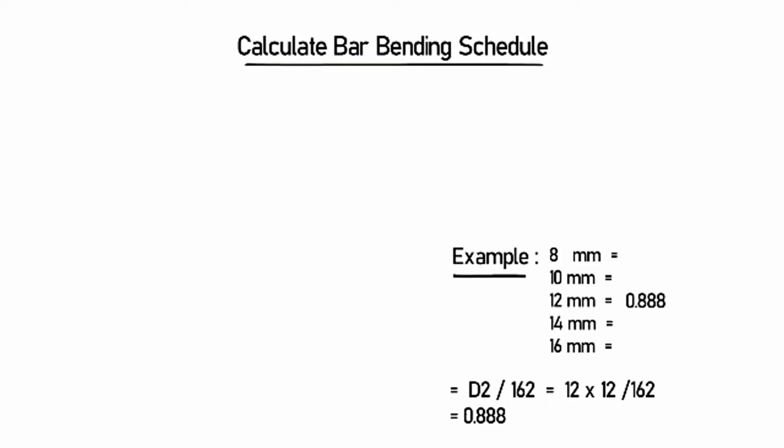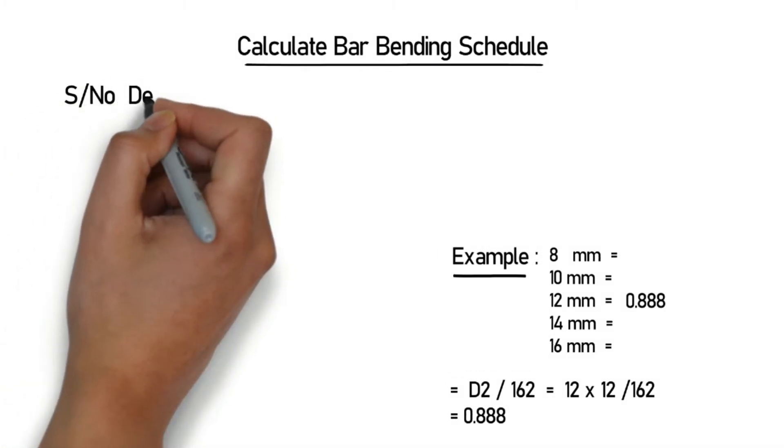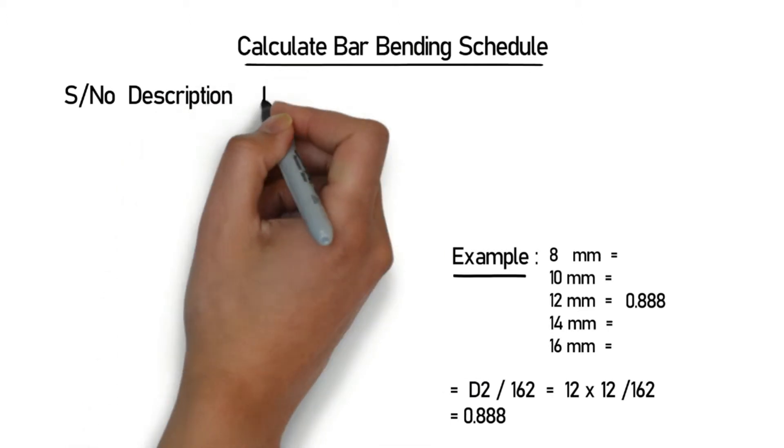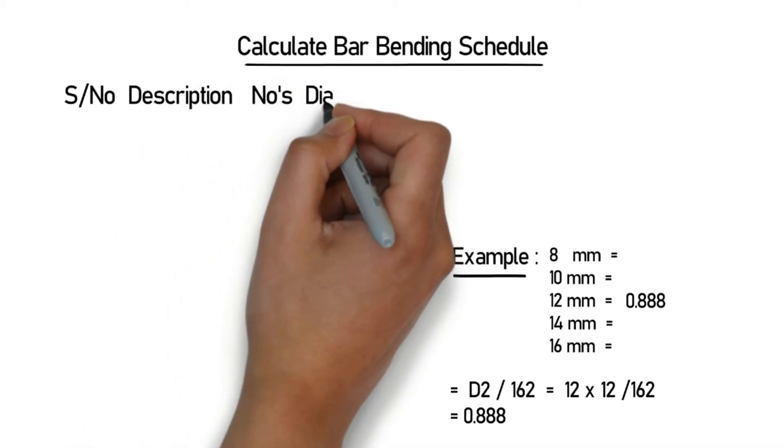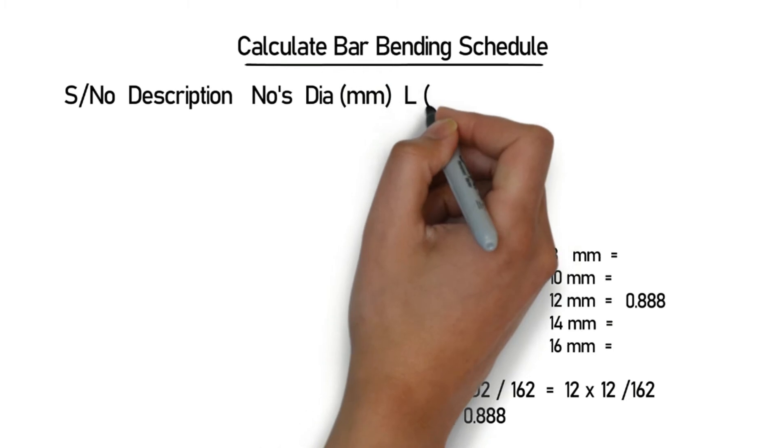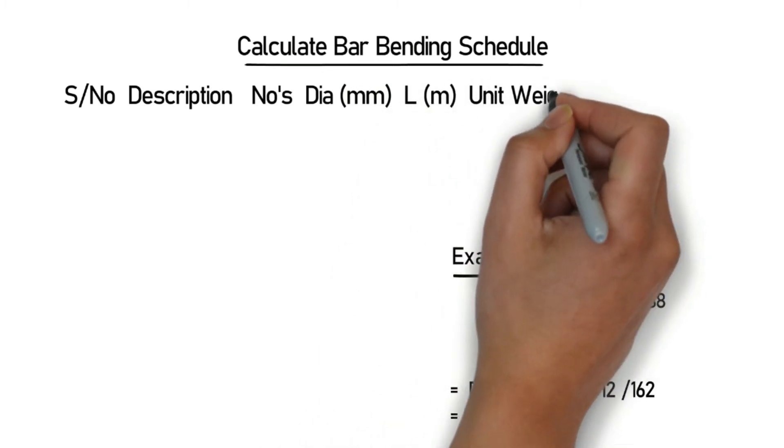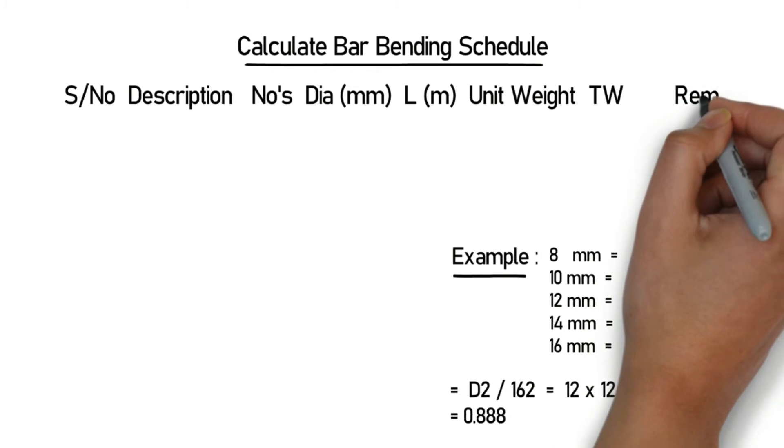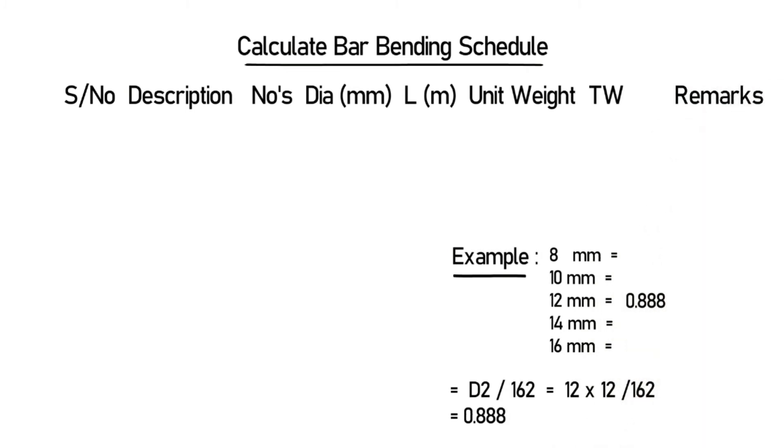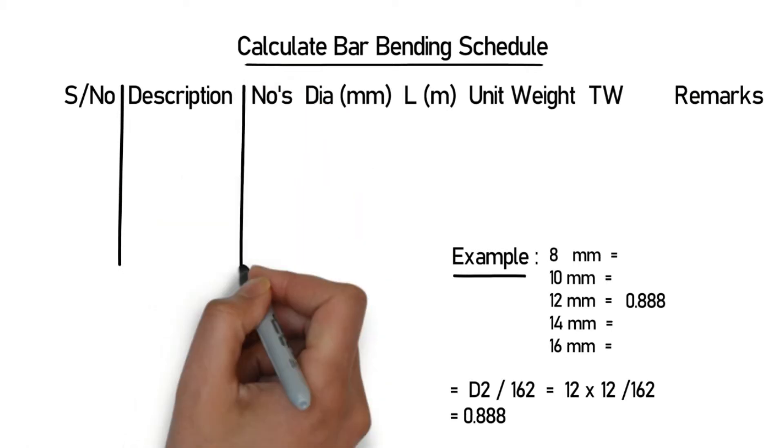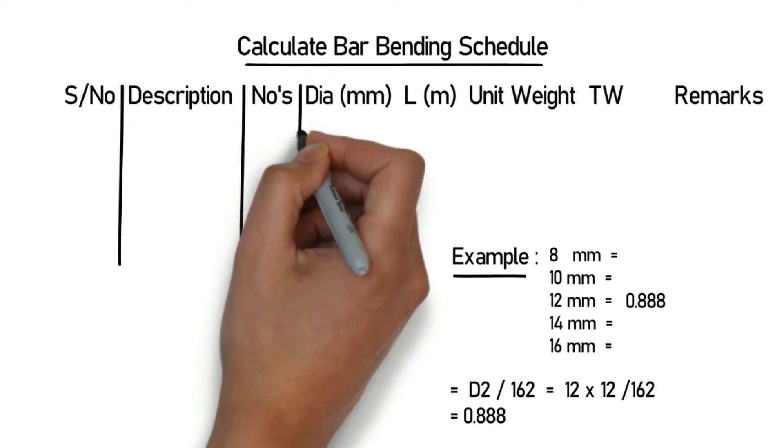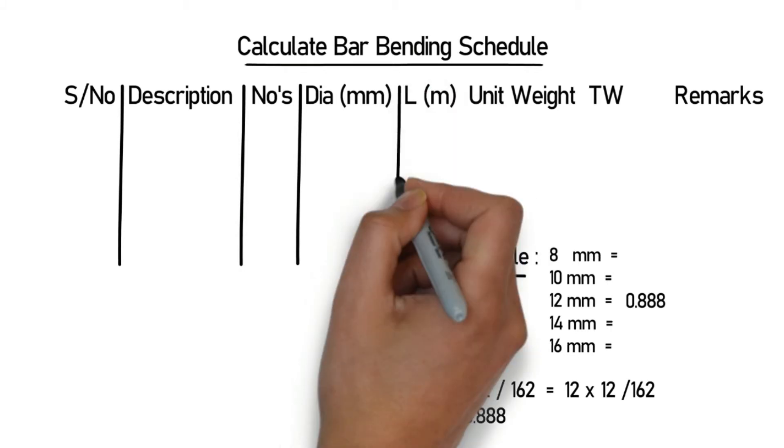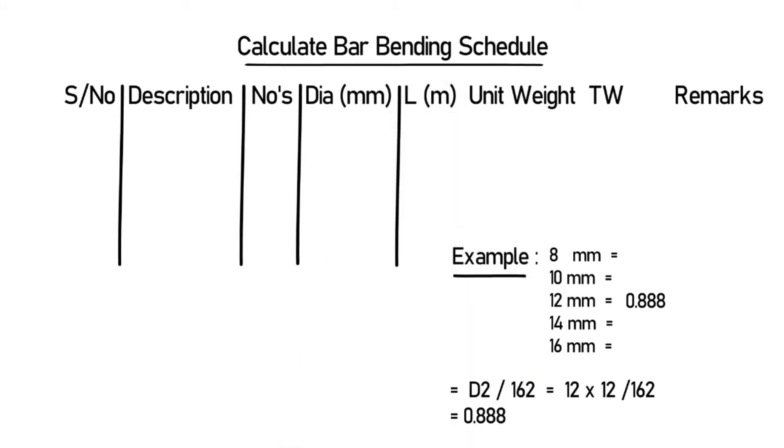The first will be serial number. The other description and numbers - that is how many number of beams you require. Diameter, which will be in millimeter. The other one is length, which will be in meters, and unit weight, and TW or total weight. The last one will be remarks.